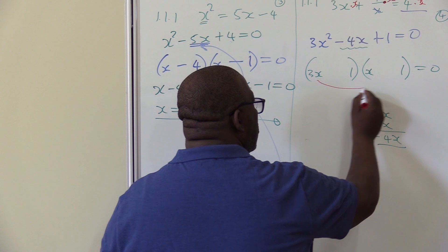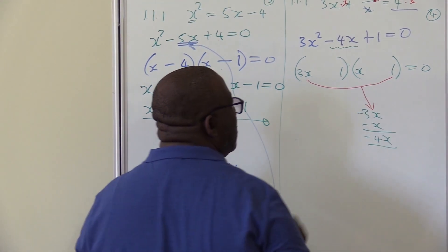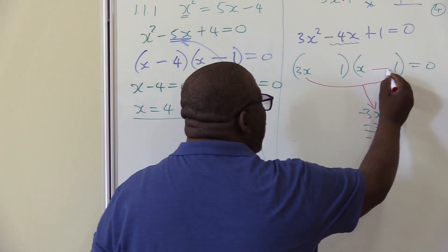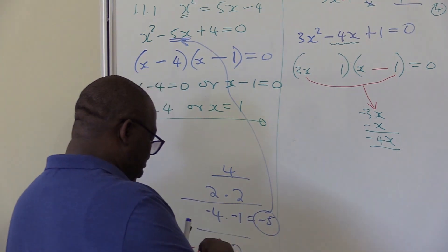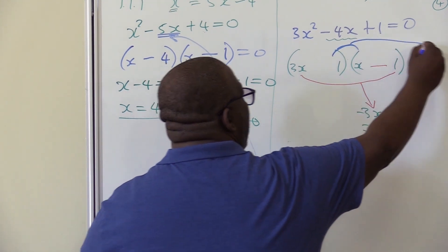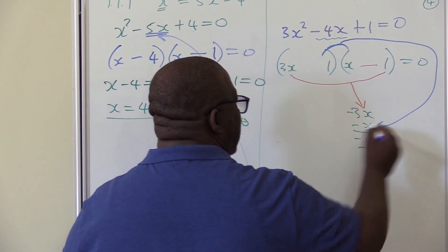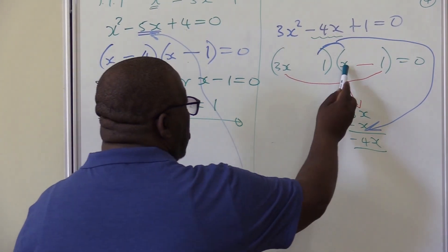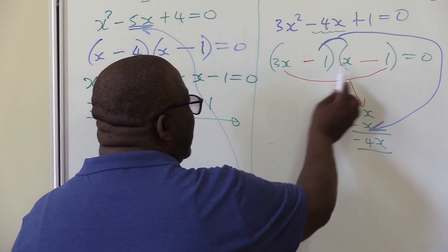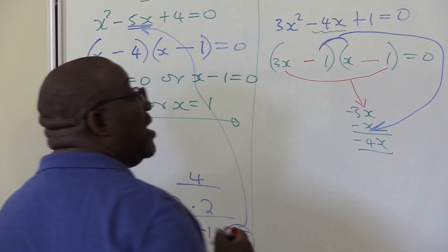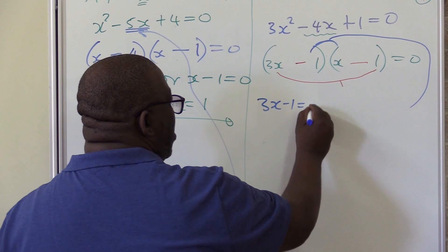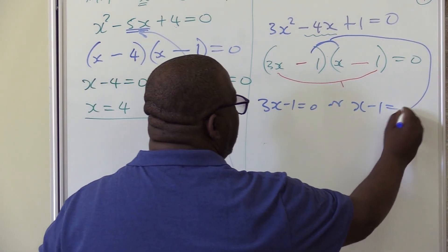If I multiply these two, I must get minus 3x, so it means one of them must be negative. Since 3 is positive, then one must be negative. Let's look at the next one. If I multiply these two, I must get minus x. This one is already positive, so this one must be negative. At the same time, negative 1 times negative 1 must give me the third term, which is positive 1. So it can be 3x minus 1 equals 0, or it can be x minus 1 equals 0.